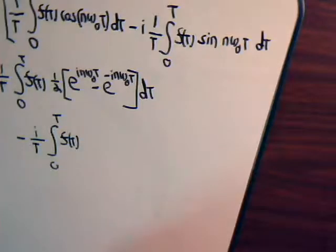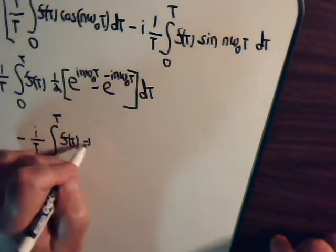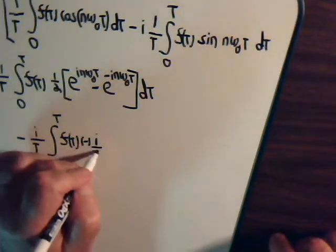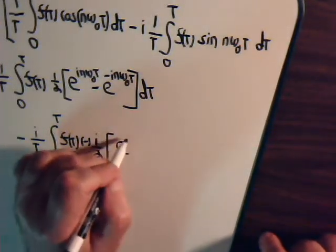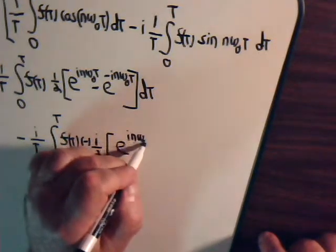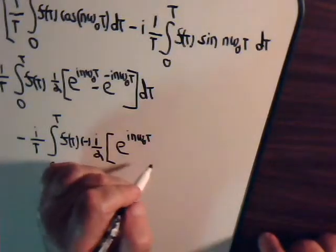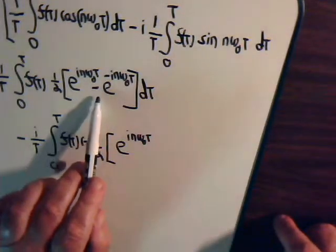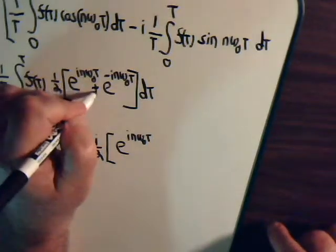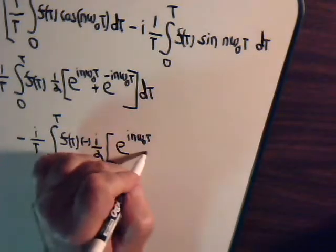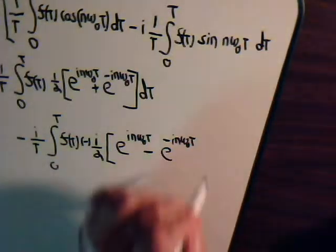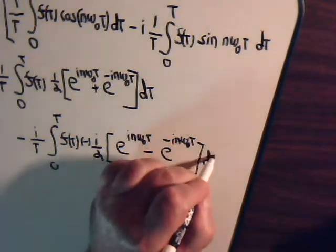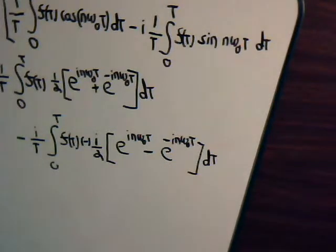Then, so that would give us, then, minus i over T times e to the i n omega t, and this is wrong, this should be plus, for the cosine, these are added together, that's a plus sign. For the sine, they are subtracted, dt.